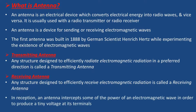In reception, an antenna intercepts some of the power of an electromagnetic wave in order to produce a tiny voltage at its terminals. With that electromagnetic radiation, it will convert a small voltage to the output.